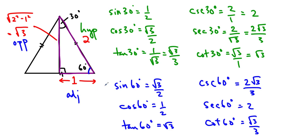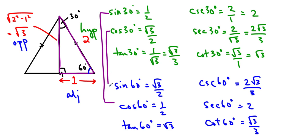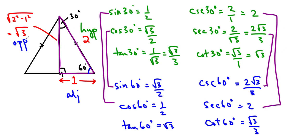One thing to note is that sine of 30 is the same as cos of 60, and cos of 30 is equal to sine of 60 — that's just because the opposite and adjacent are flipping. Similarly, sec 30 equals cosec 60, and cosec 30 equals sec 60. We're just using SOHCAHTOA and flipping the ratios to get our reciprocal trig ratios. Hope you enjoyed it — ask any questions in class, and I will see you soon.